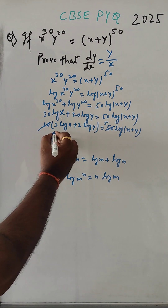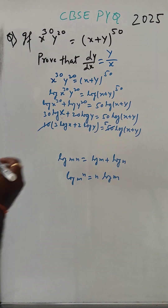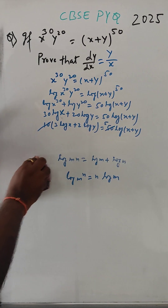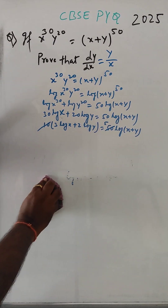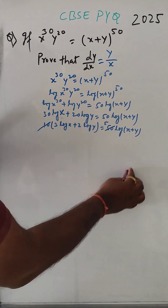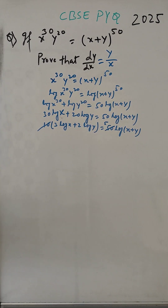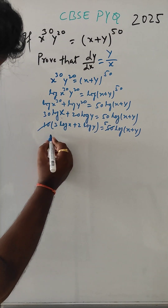So now we have 3 log x plus 2 log y equals 5 log of x plus y. Here we can do the differentiation.